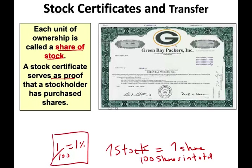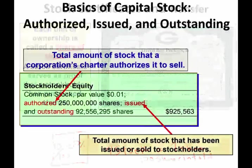So in the grand scheme of things, if you happen to own 10 shares of that company — 10 out of 100 — you own 10 percent. You have ownership of 10 percent, which means you have voting power of 10 percent as well.